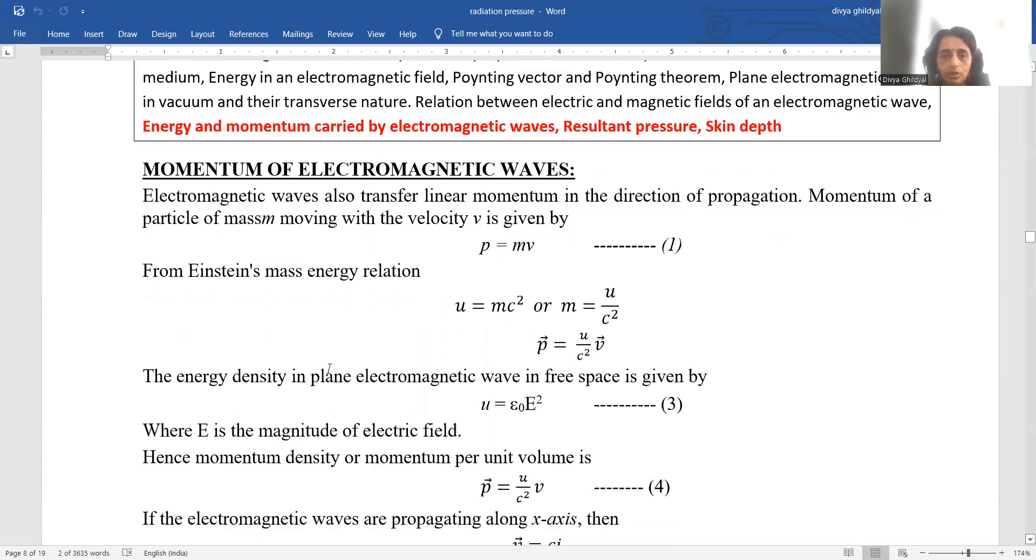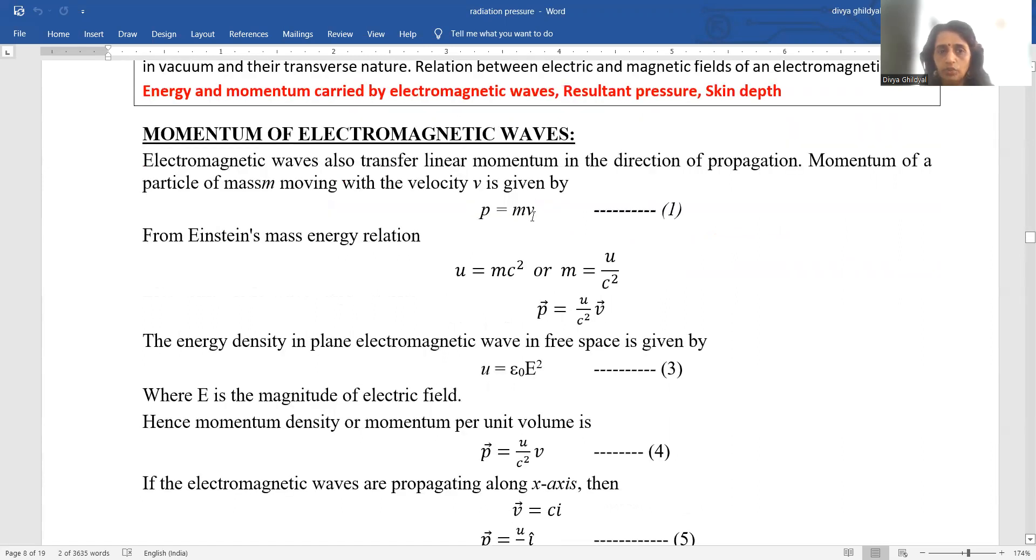So let us begin. Momentum. You remember the formula for momentum? Mass into velocity. So electromagnetic waves also transfer linear momentum in the direction of propagation. So mass of a particle m moving with velocity v, momentum is given by mass into velocity.